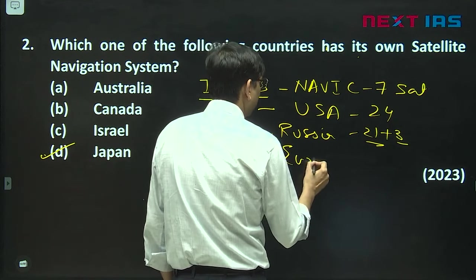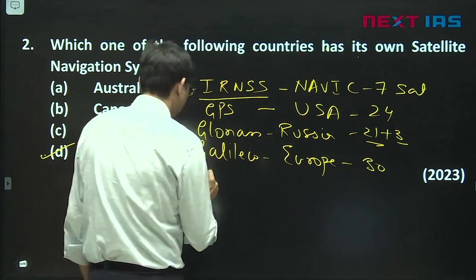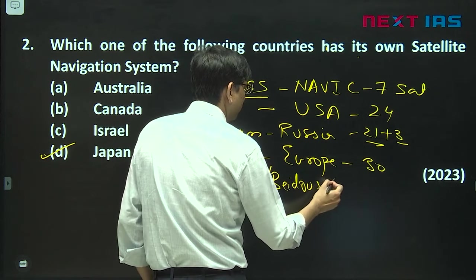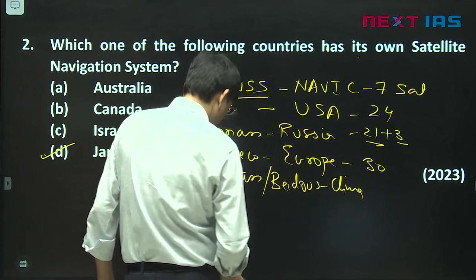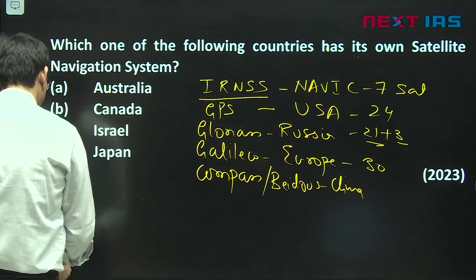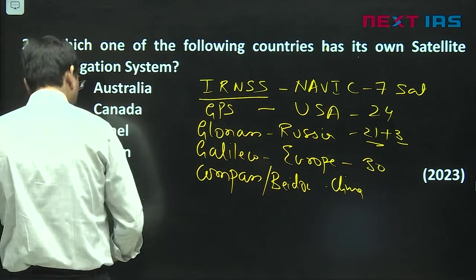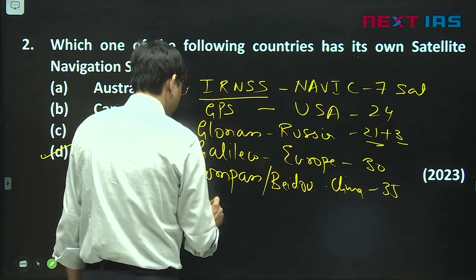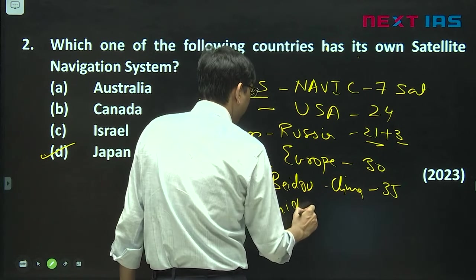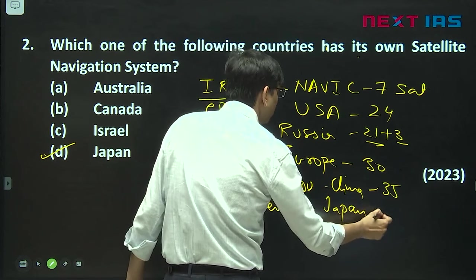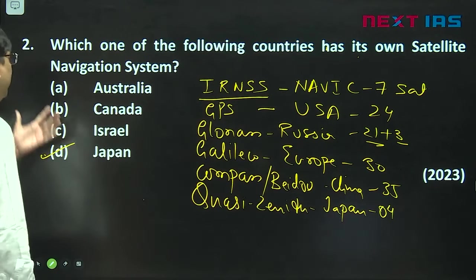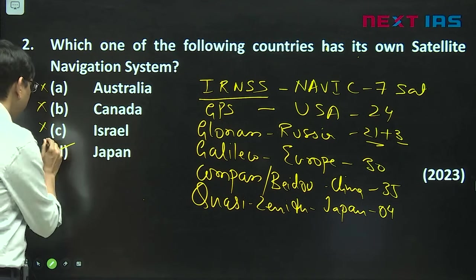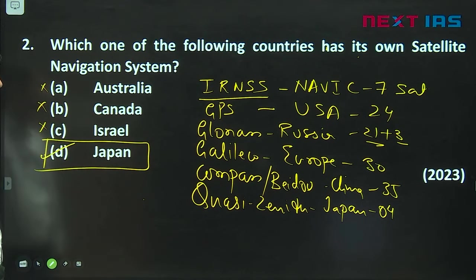Then you have Galileo of Europe, 30 satellites. Then you have Compass or BeiDou of China, it is not Beidou's it is BeiDou, of China with 35 satellites. And then we have Quasi-Zenith of Japan with 4 satellites. Here this is not the answer. These are the only navigation systems of the world. This is not the answer. This is not the answer. This is the answer: Japan.